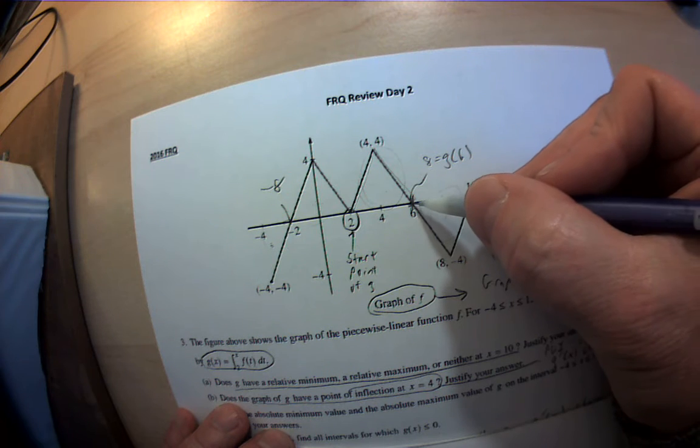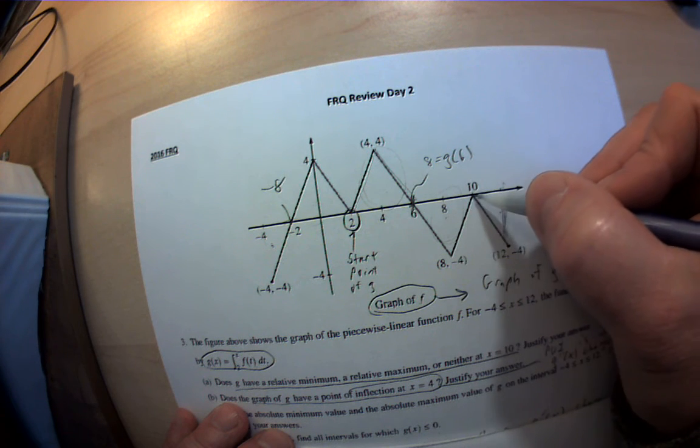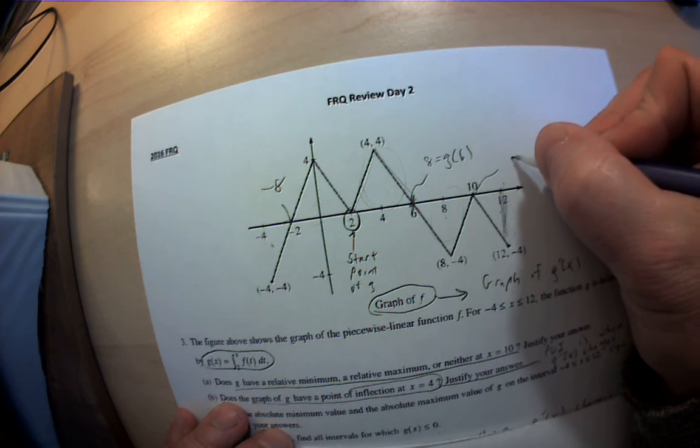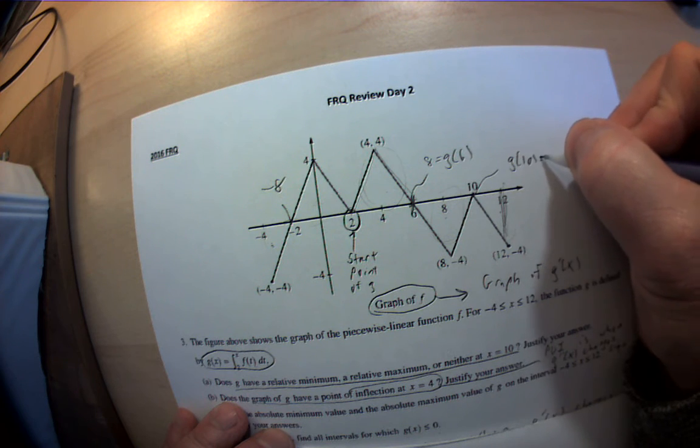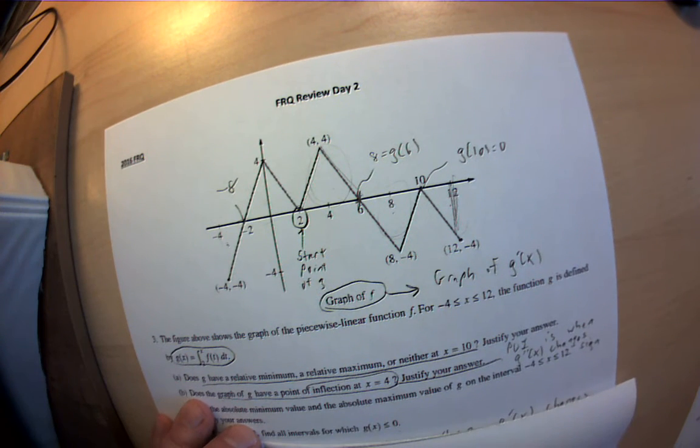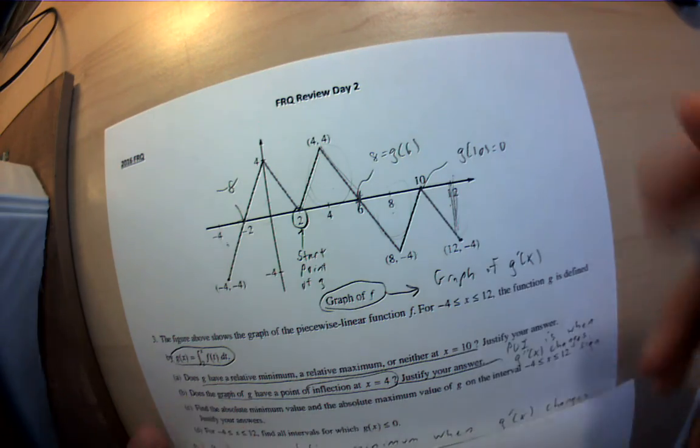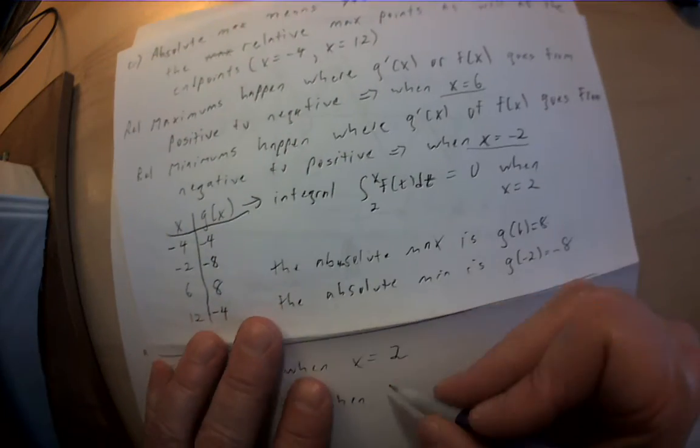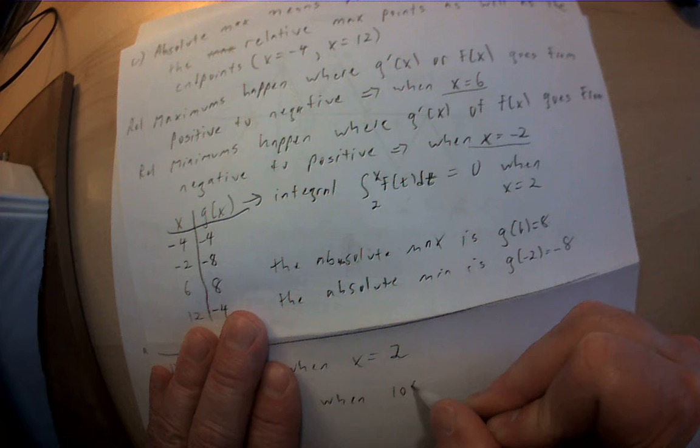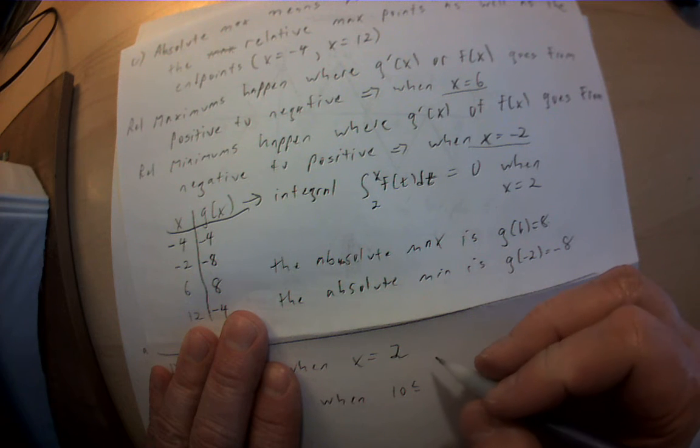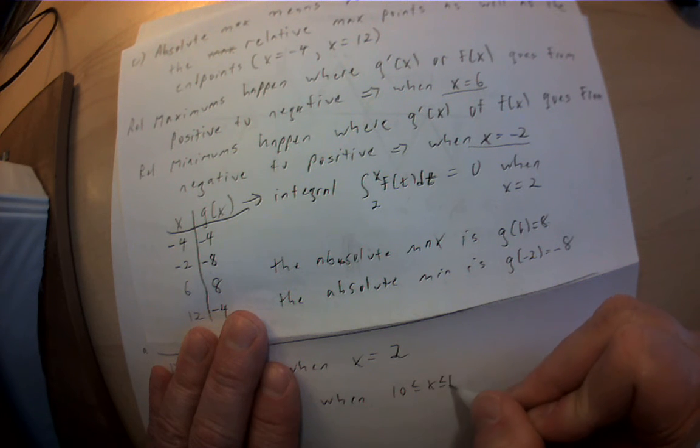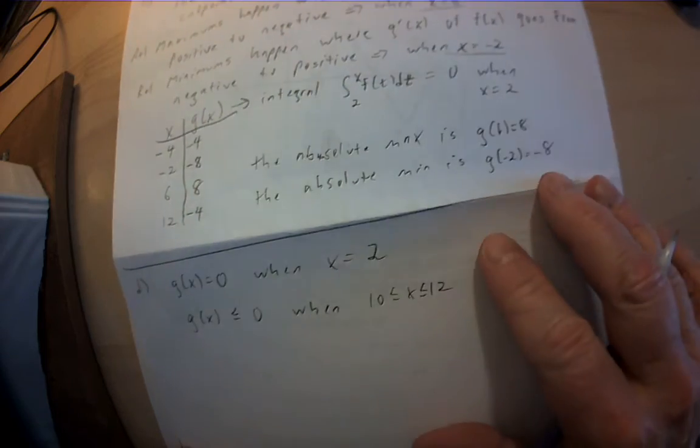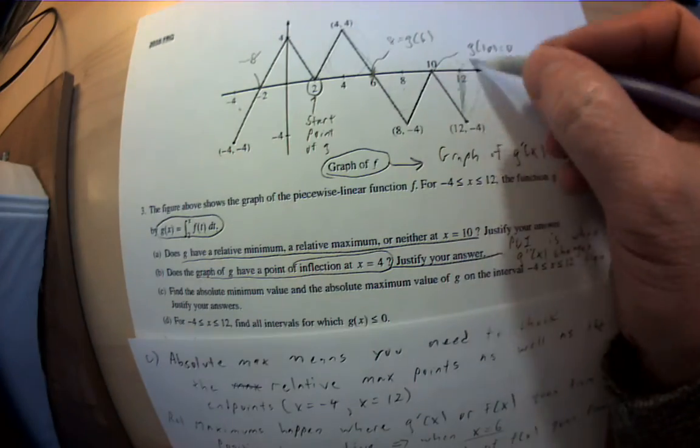I'm still positive when I'm subtracting. At this point, g of 10 equals 0. Anything after 10, I'm going to be less than 0, so when I'm between 10 and 12. So between 10 and 12, you can see it from here.